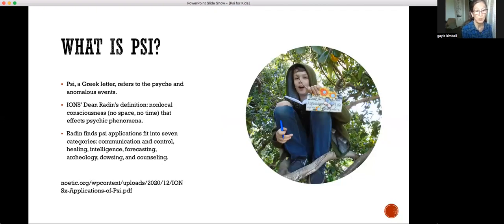They need tools, and PSI is the basis for it. PSI is a Greek letter referring to the psyche and anomalous events not explained by normal common sense. At the Institute for Noetic Sciences, Dean Radin defined PSI as non-local consciousness because at the quantum level there's no space, no time—everything is connected, allowing psychic phenomena to occur. Radin finds PSI applications fit into seven categories: communication and control, healing, intelligence, forecasting the future, archaeology, dowsing to get answers, and counseling.